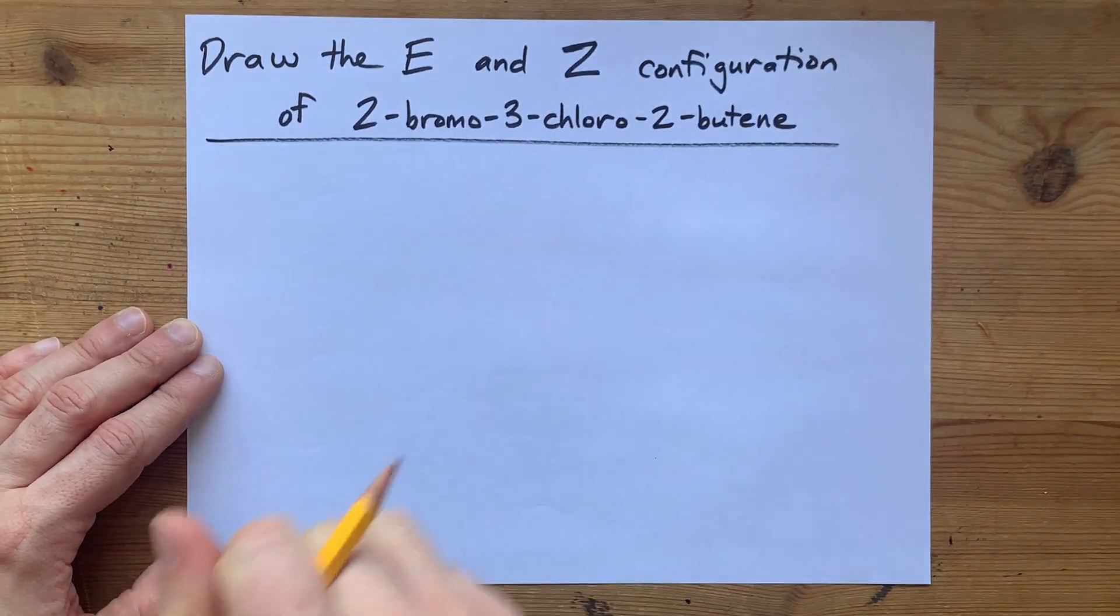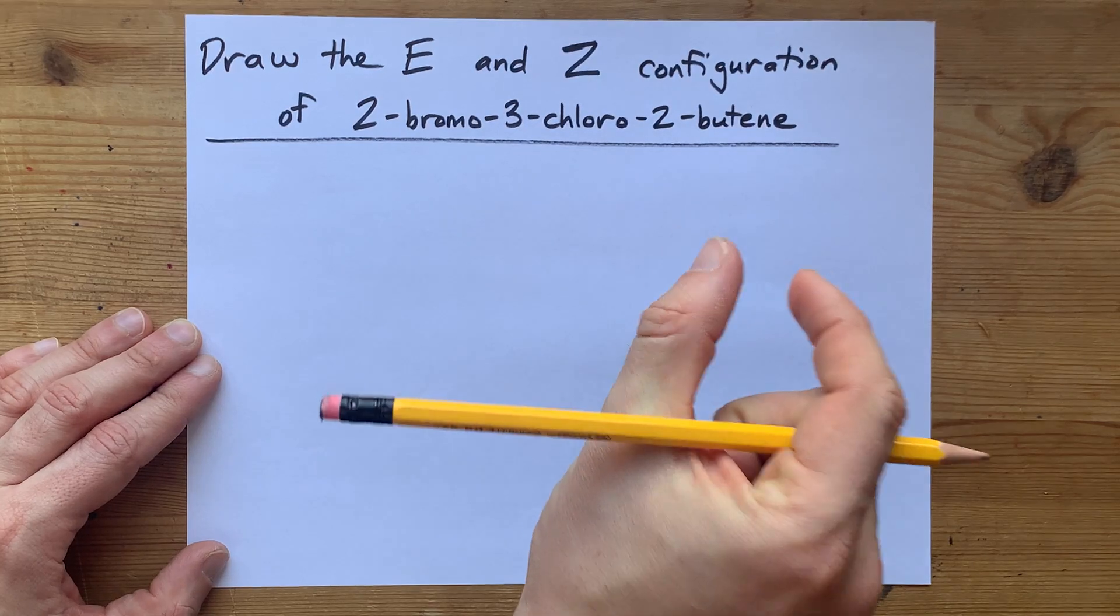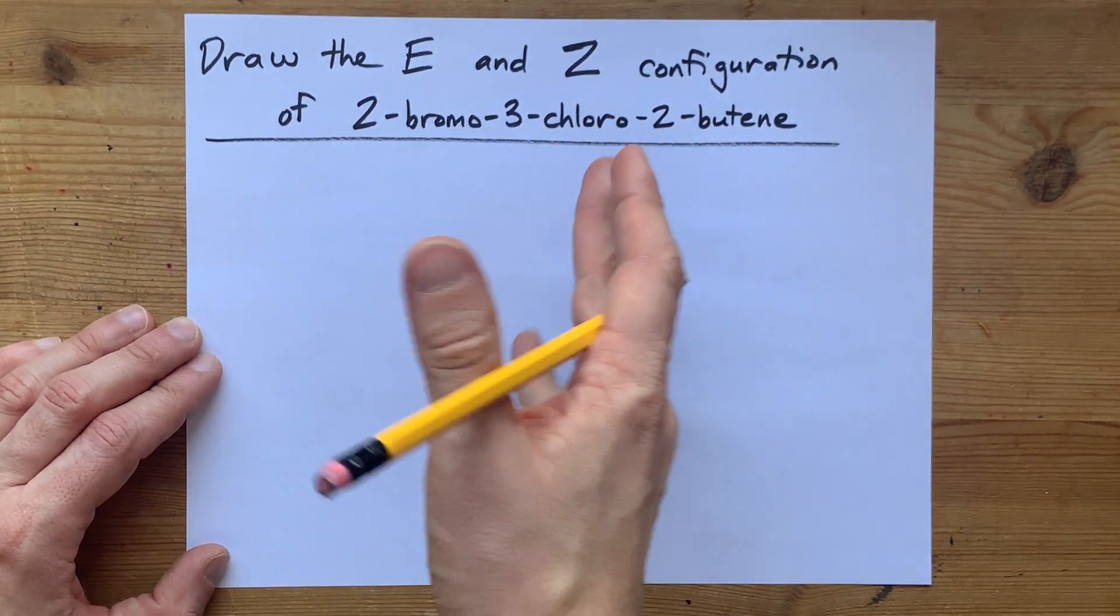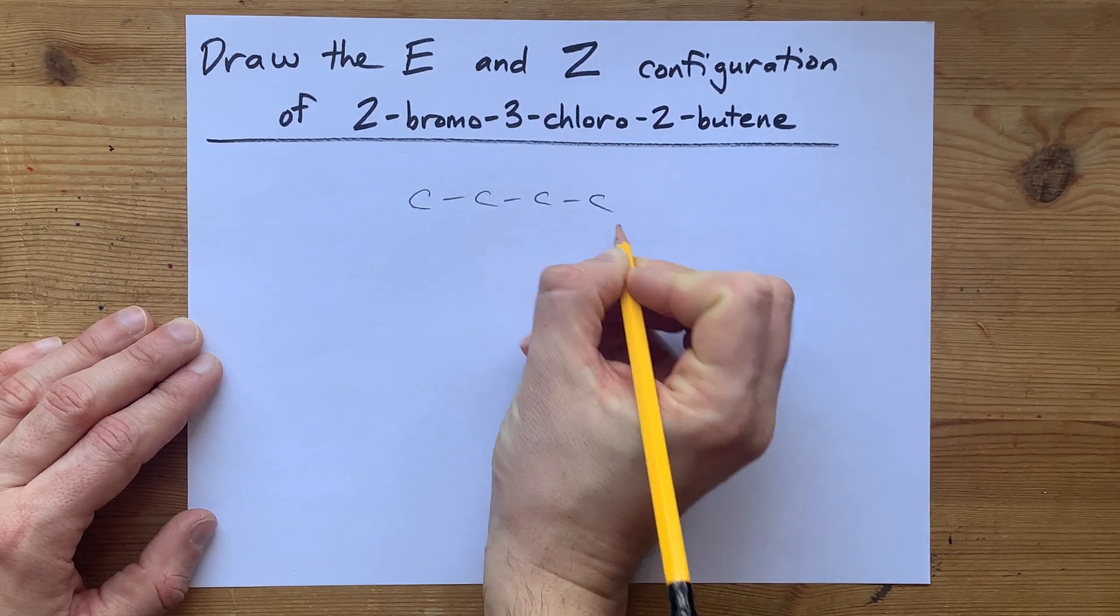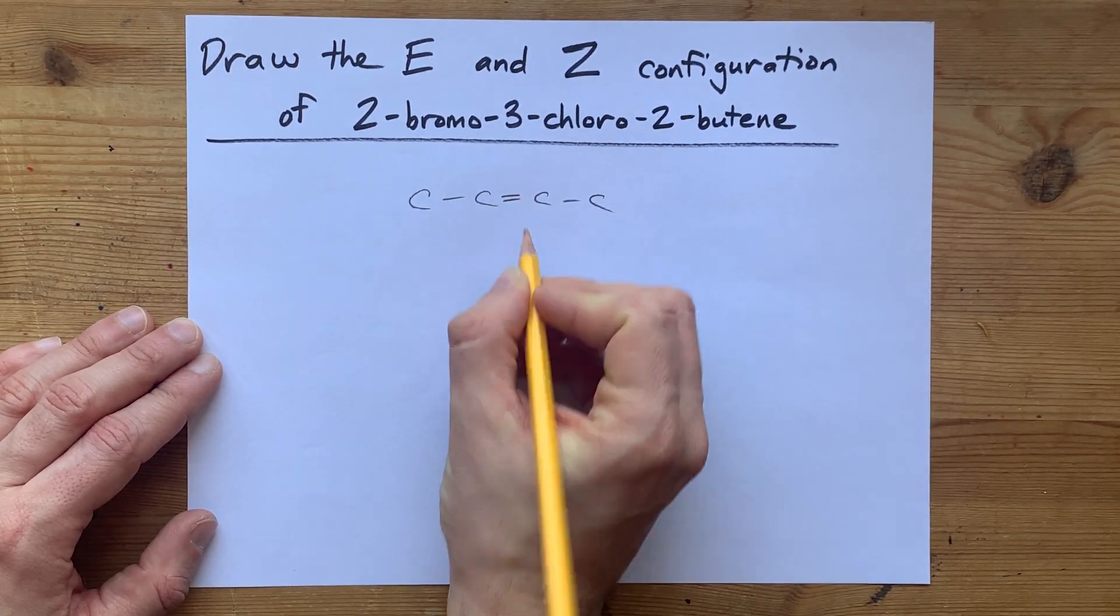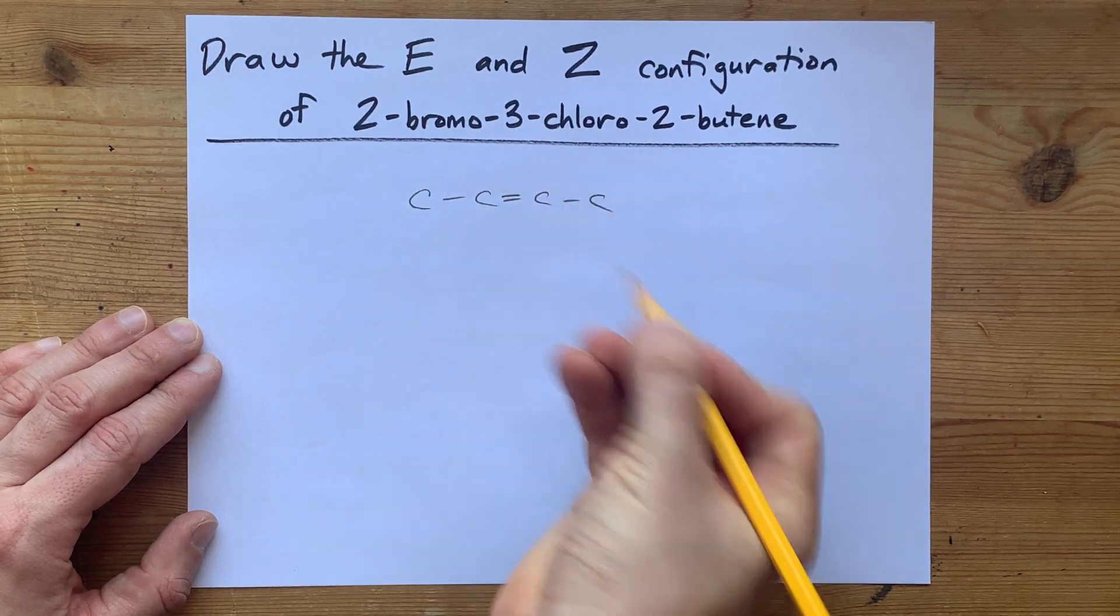Bute is a four-carbon chain, ene is a double bond, and that two tells us the double bond starts at the second carbon. So, carbon, carbon, carbon, carbon. Double bond from carbon 2 to the next one, which is 3.